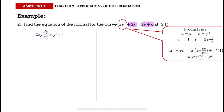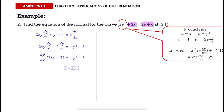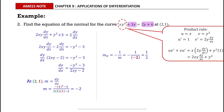Differentiating the right side gives 2y plus 6 equals 2 dy/dx. After that, group the dy/dx terms on the left side, then factorize dy/dx and solve for dy/dx. To find the gradient of tangent, substitute the point into dy/dx.